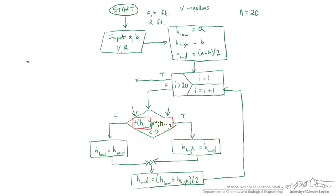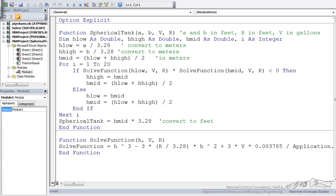The only thing we have left of our flow chart is the output. Once we've done those 20 iterations, we would like it to display an actual height. H low, H high, and H mid are all going to approach the same value. We are done. Let's take a look at this in the code in VBA.